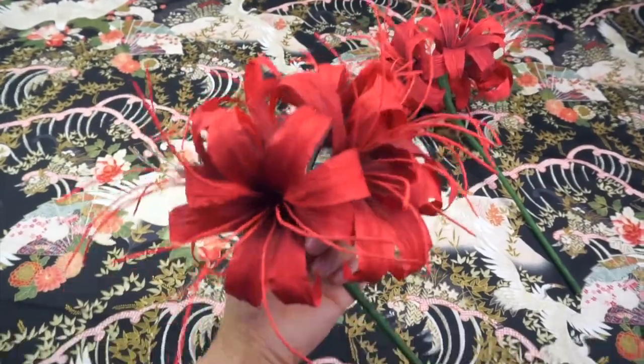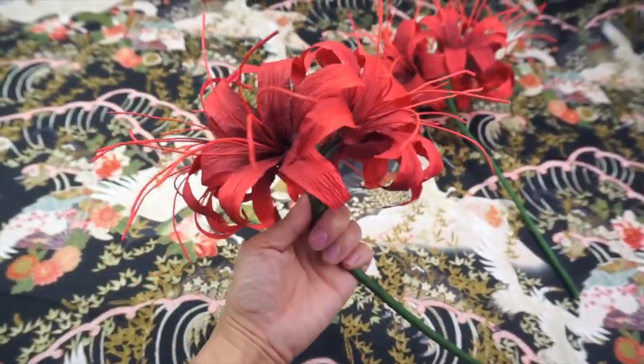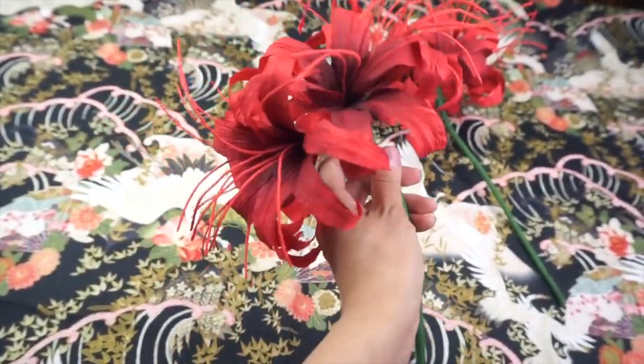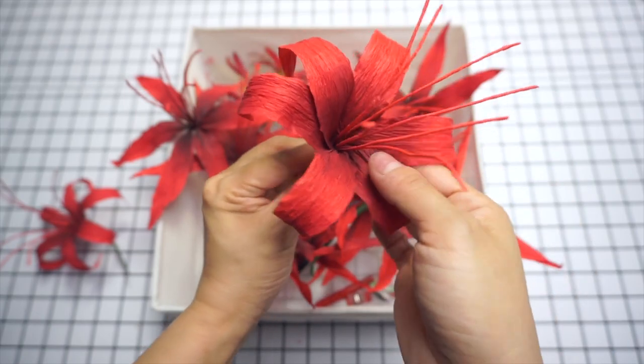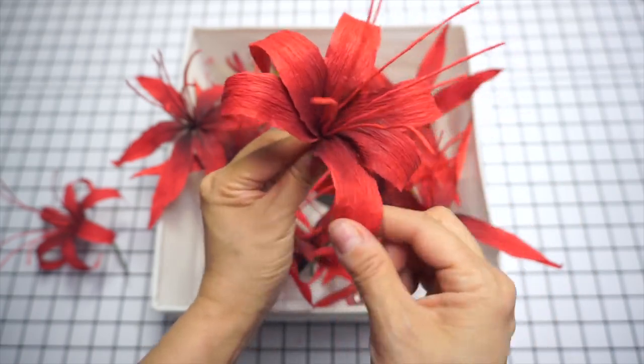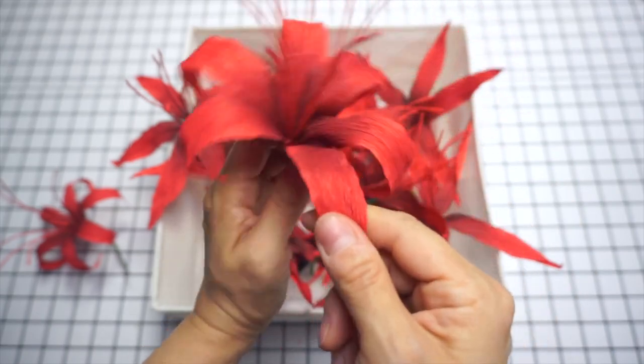The spider lily grows in clusters of six flowers per stem, which is why they look so striking and beautiful. Each flower is made up of six petals and seven stamens, the thin antennas bursting forth.